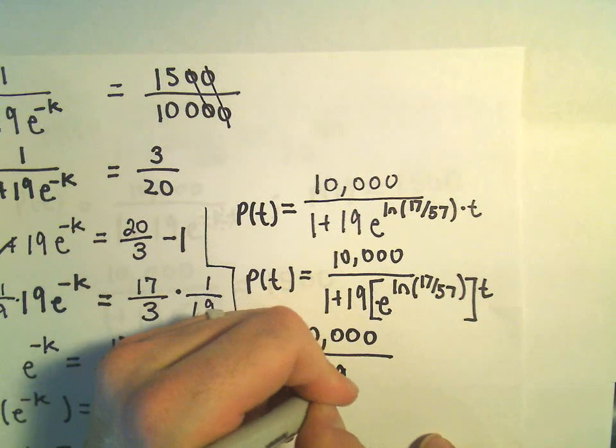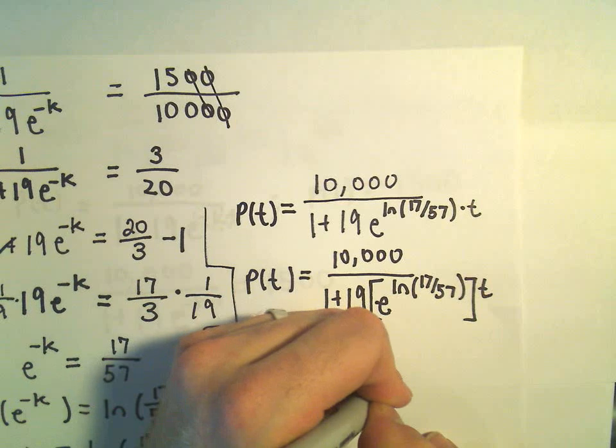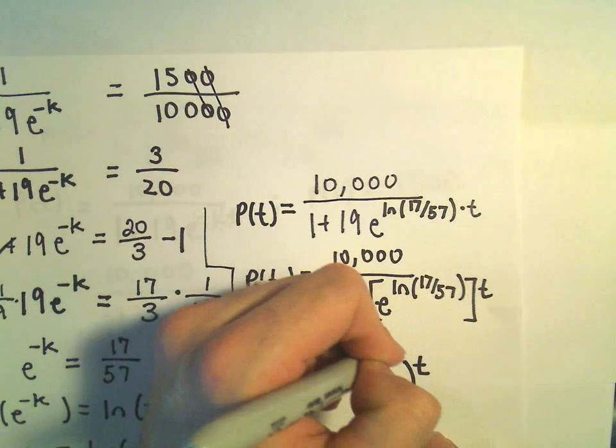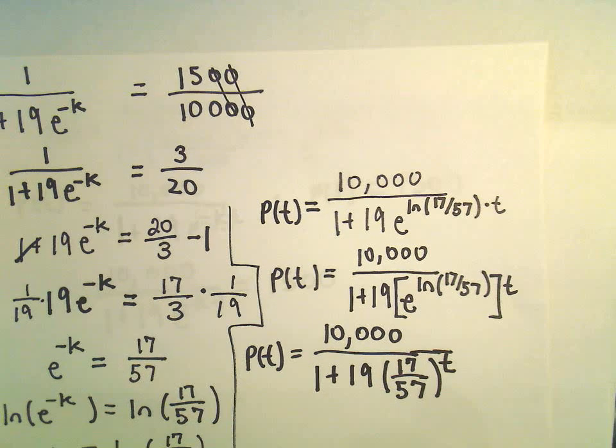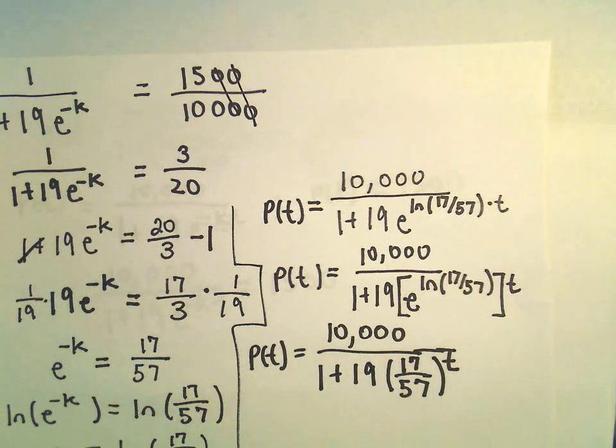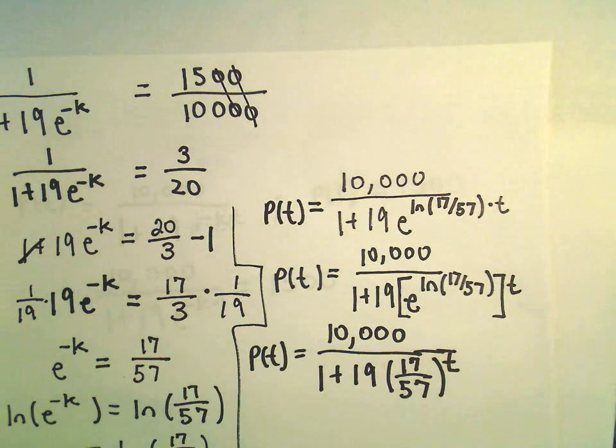So really we'll have 1 plus 19 times the quantity 17 over 57 raised to the t power. And now to me this would be kind of a nice formula for the population at some time t.